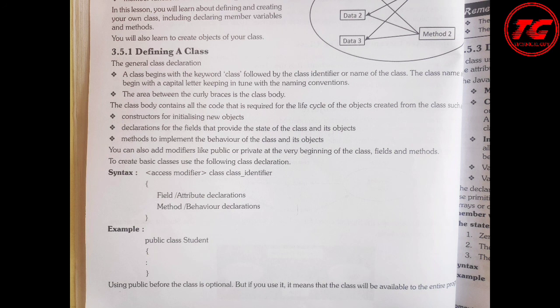For example, public class Student — public is the access specifier meaning this class can be used anywhere in the program, class is the keyword, and Student is the name of the class, followed by curly braces. Inside the curly braces you specify the variables and methods of the student class.